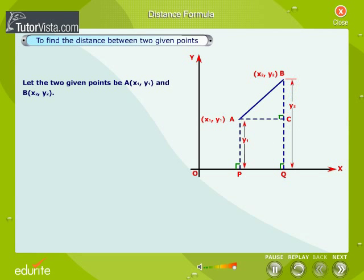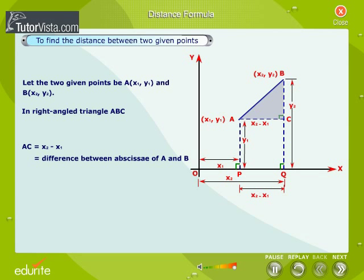The length of AP is y1 and the length of BQ is y2. It is clear from the adjoining figure that in right-angled triangle ABC,